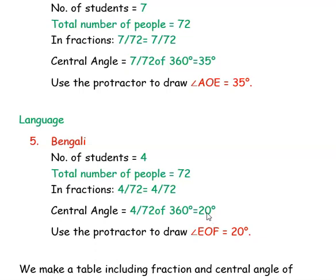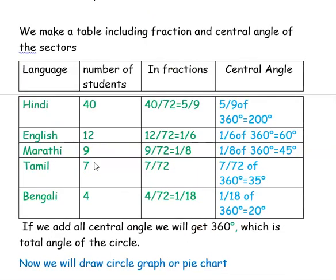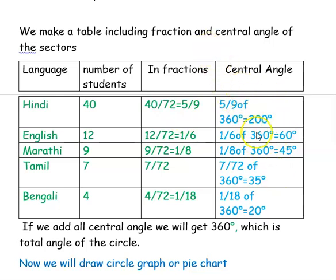Now we have found out the central angle for all the different languages. Before drawing the pie chart, I am making a table with all the information: language, number of students speaking that language, fraction, and central angle. I have written all the detailed information in this table. If you add all these angles, you should get 360 degrees, which is the central angle of the circle.